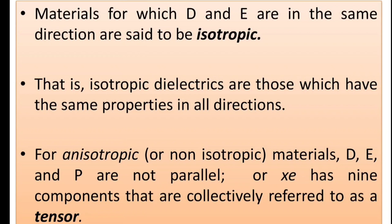Materials for which D (electric flux density) and E (electric field intensity) are in the same direction are said to be isotropic. Isotropic dielectrics have the same properties in all directions.